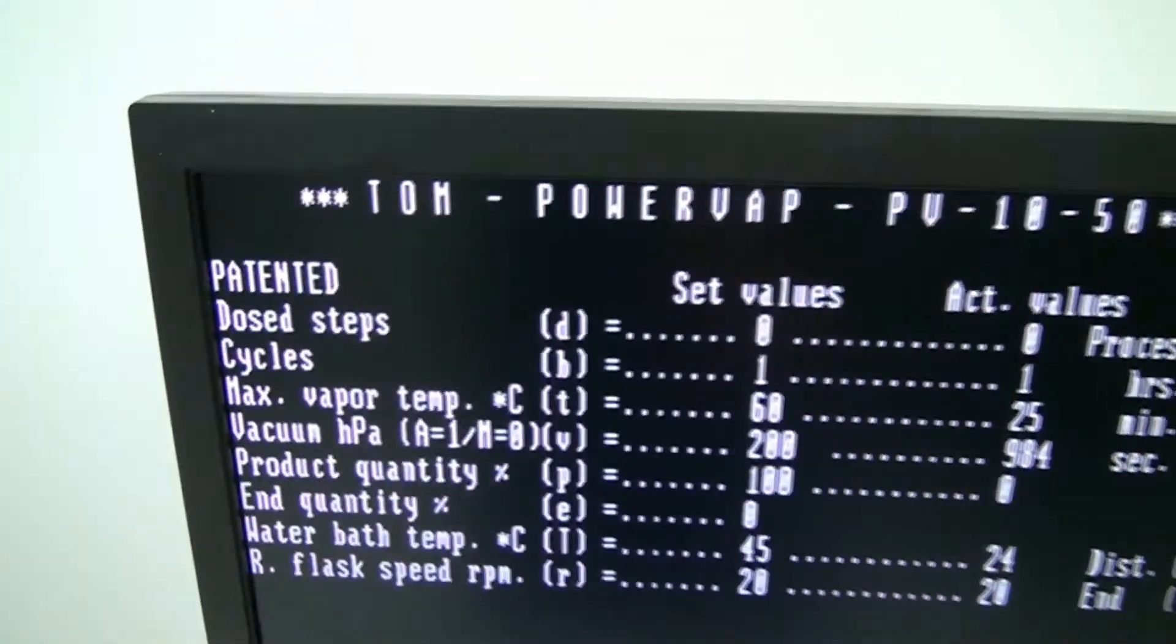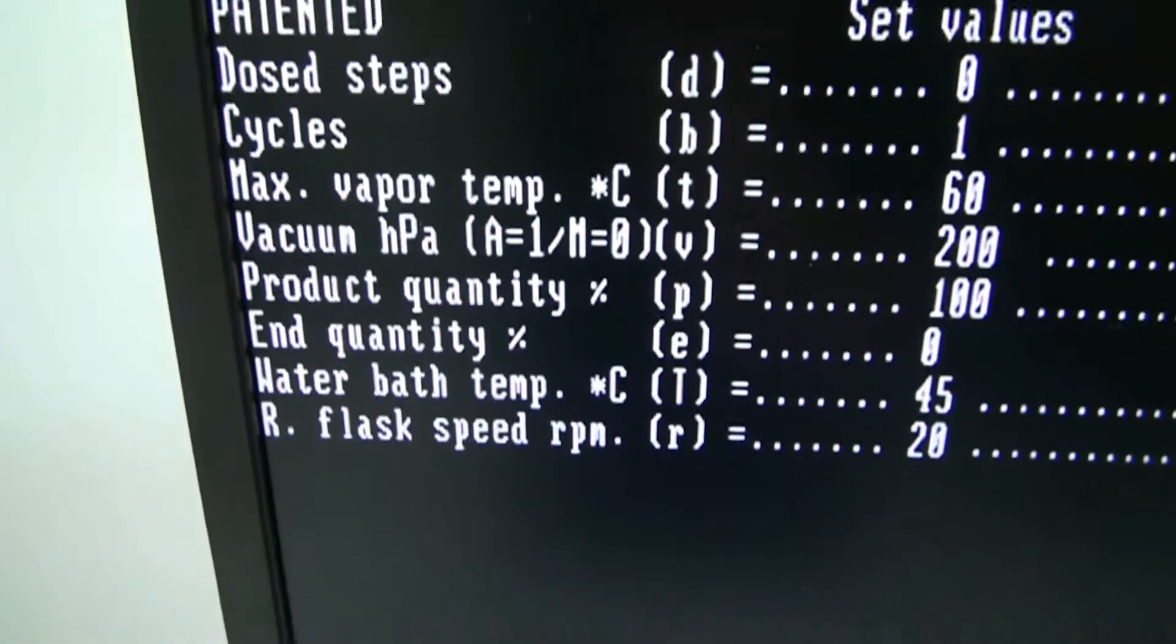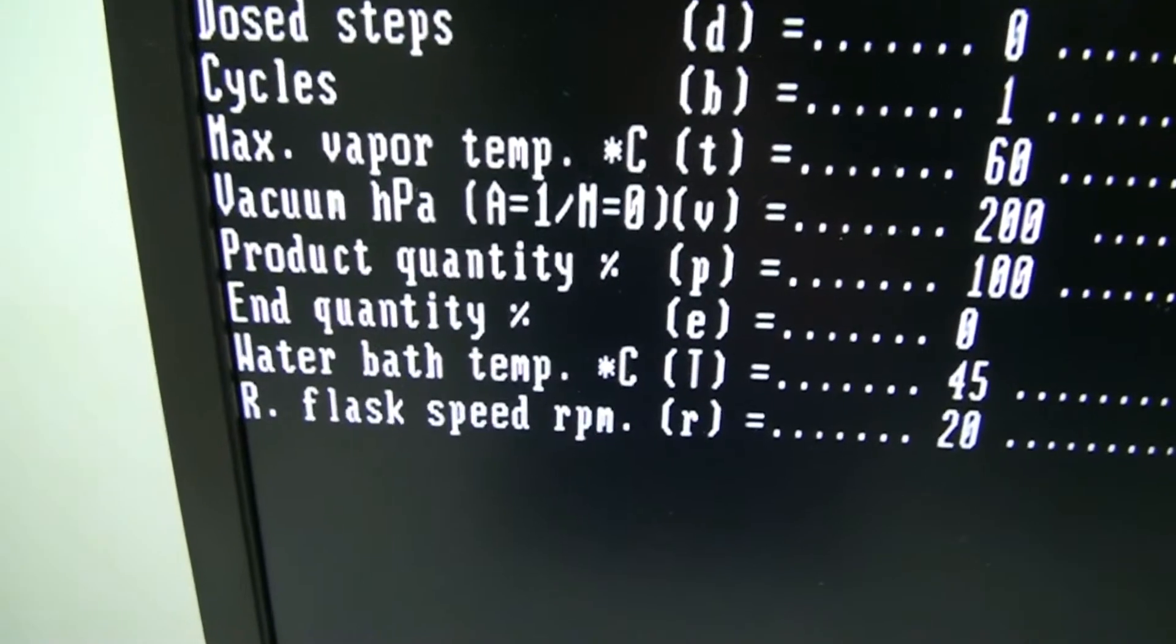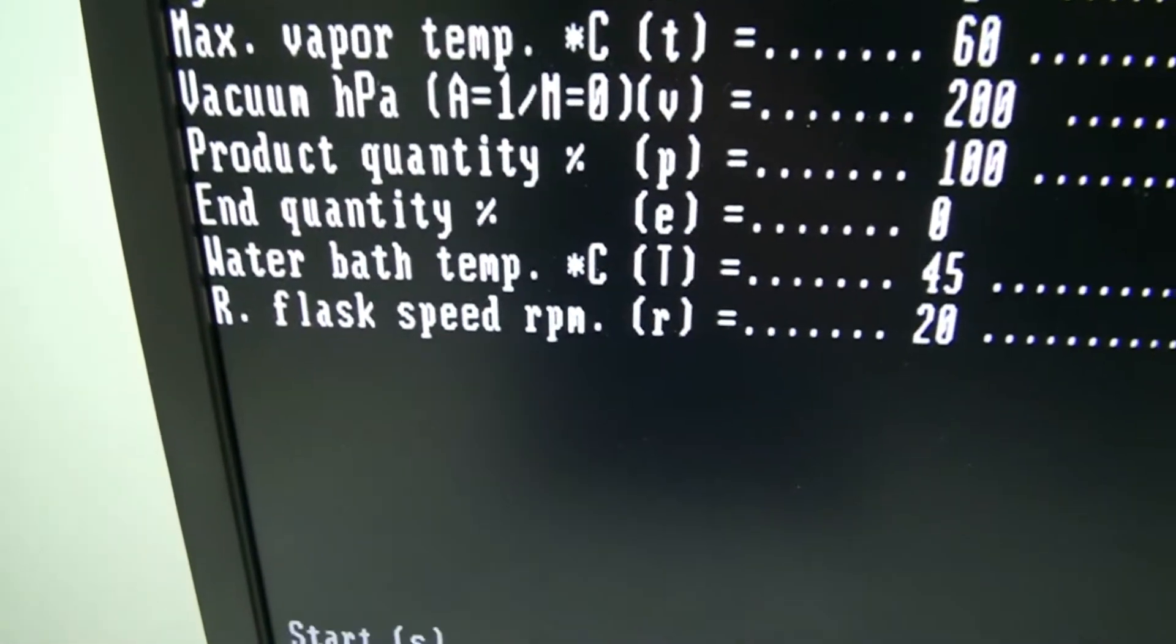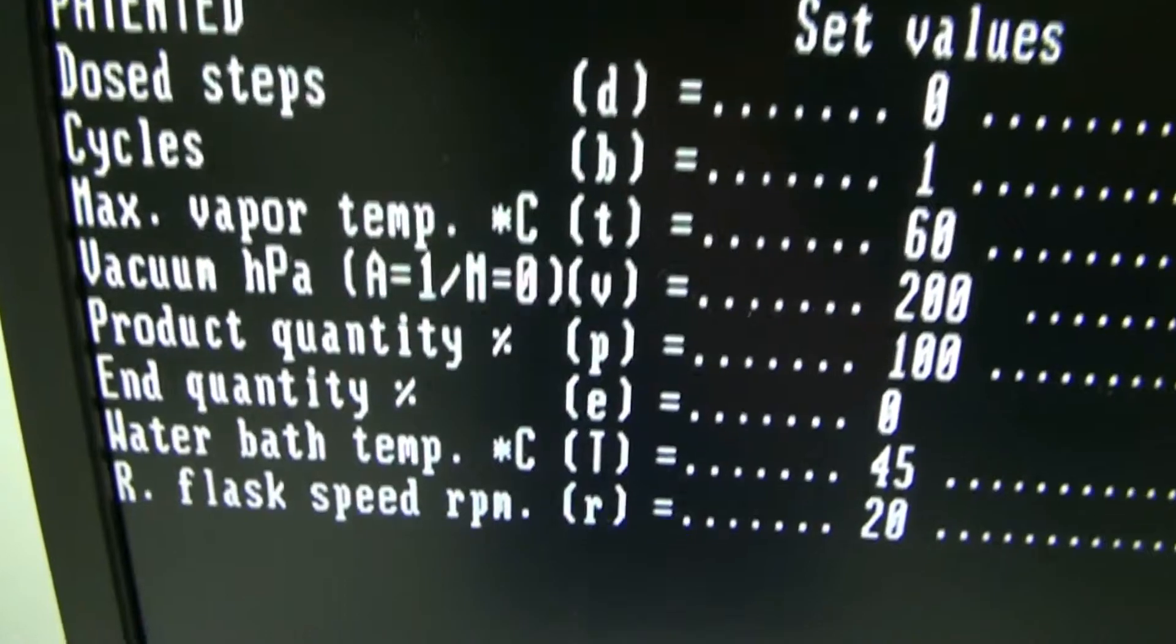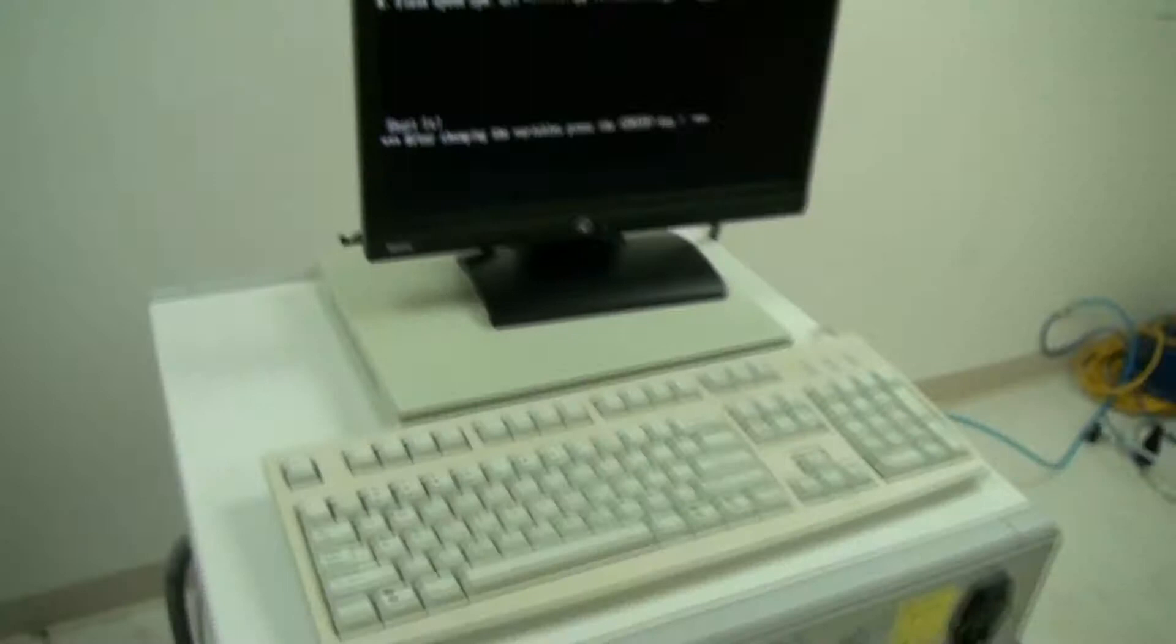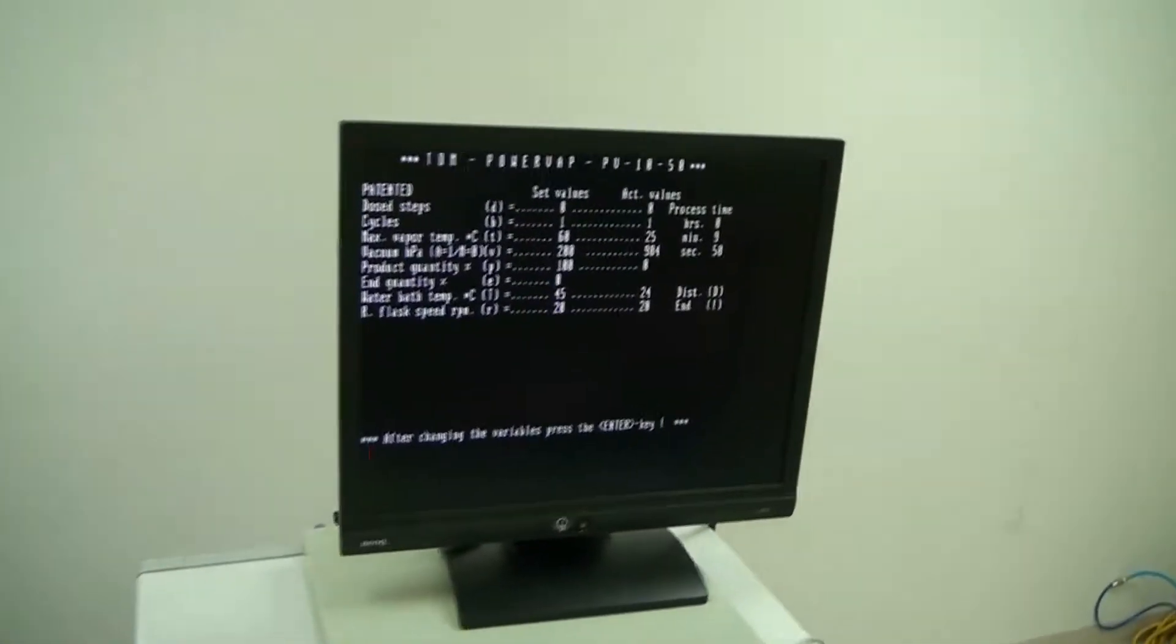Off to the left you have all your settings that you can actually change: the dose step cycles, vapor temp, vacuum, product quantity and quantity, water bath temp, and then the flash speed. You can set all those values by just simply hitting the command key that's designated there. We're gonna show you a little bit what you can do.